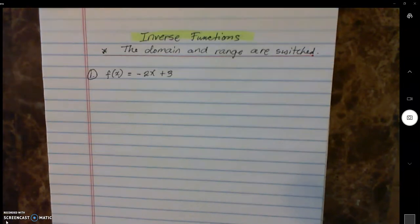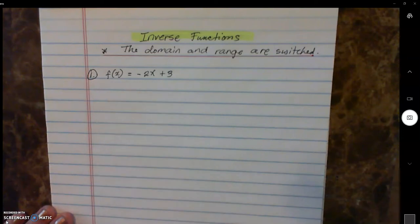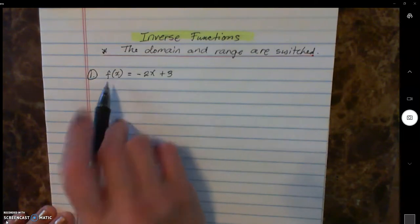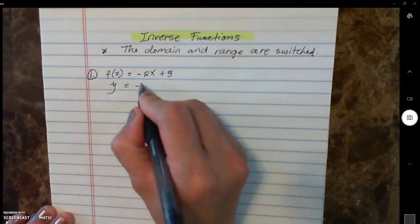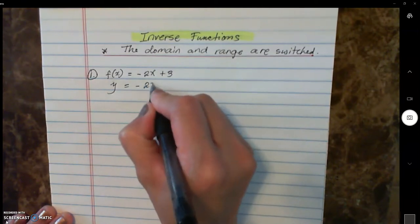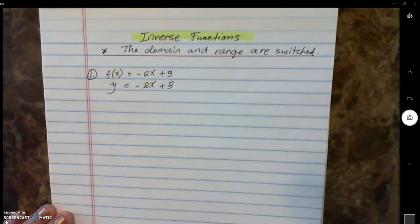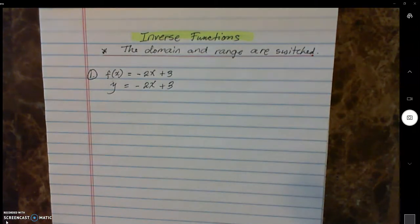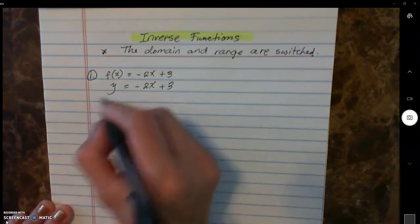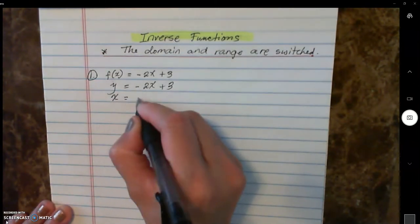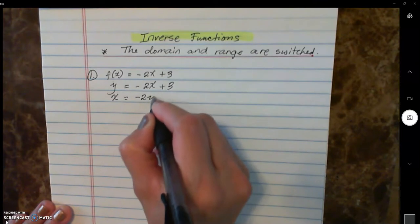For our first example, we are given f of x equals negative 2x plus 3. For us to be able to switch the y and the x properly, we need to first replace f of x with y so that we can clearly see that y is your range, and then this is negative 2x plus 3. To get the inverse function, we need to switch our domain and range — so y turns to x, and x turns to y.